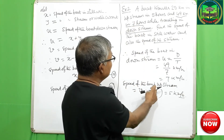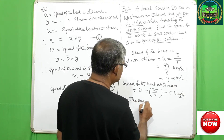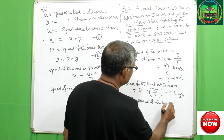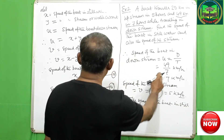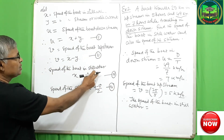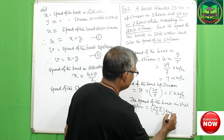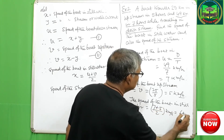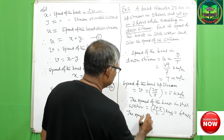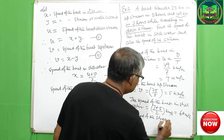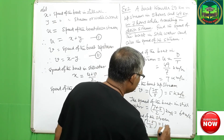In 5 hours the boat travels 25 km upstream, so speed equals distance by time equals 5 km per hour. Therefore, speed of the boat in still water X equals U plus V by 2, that is 7 plus 5 by 2, which is 12 by 2, equal to 6 km per hour. And speed of the stream equals U minus V by 2, that is 7 minus 5 by 2, equal to 1 km per hour.